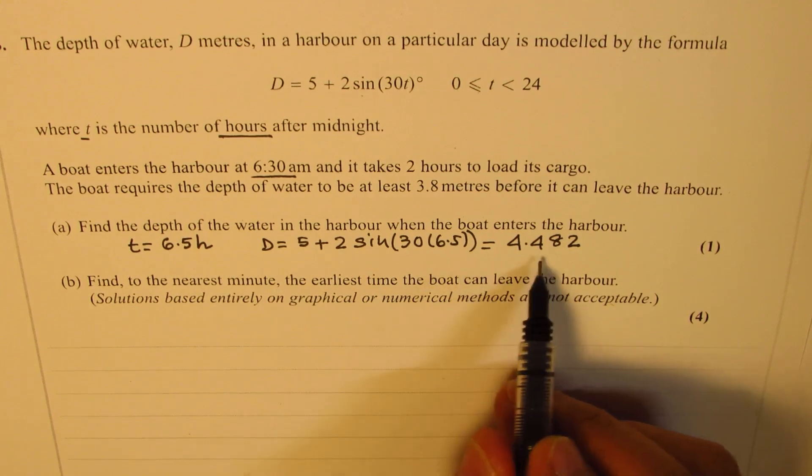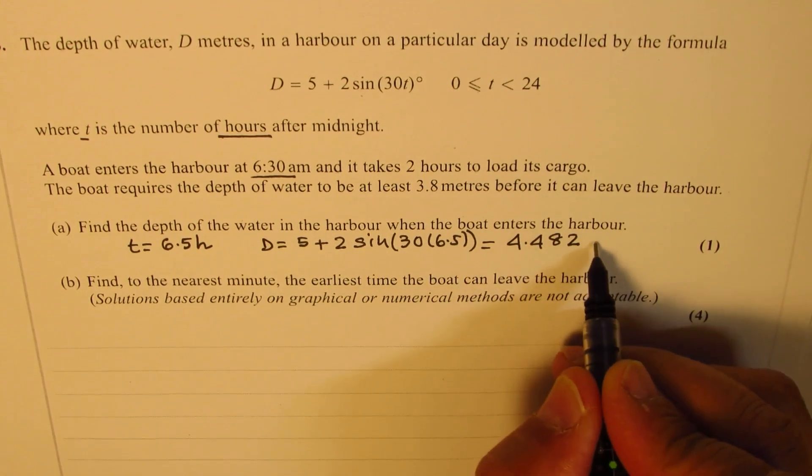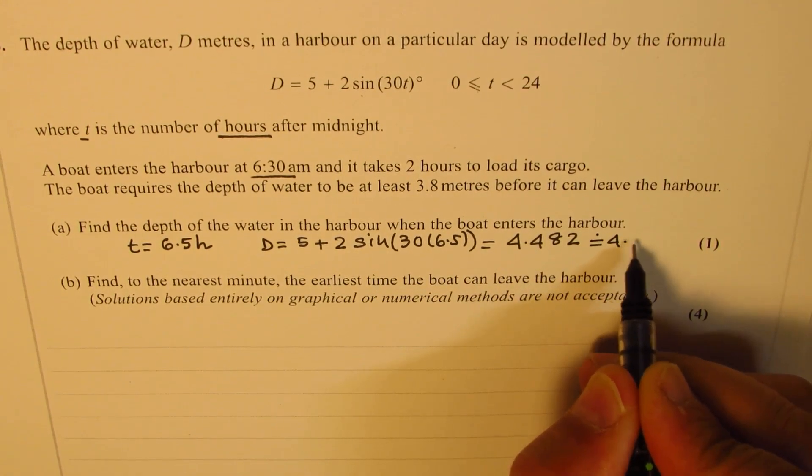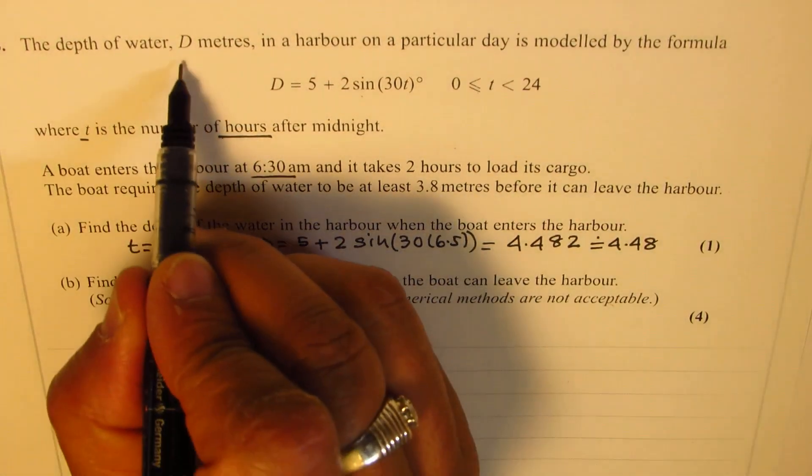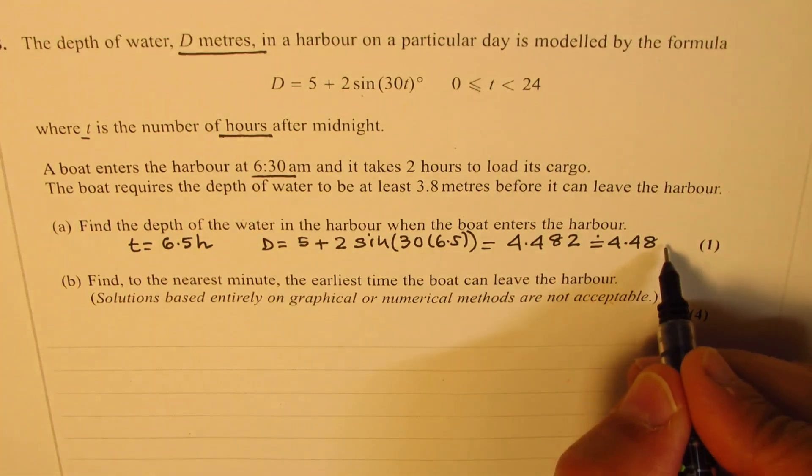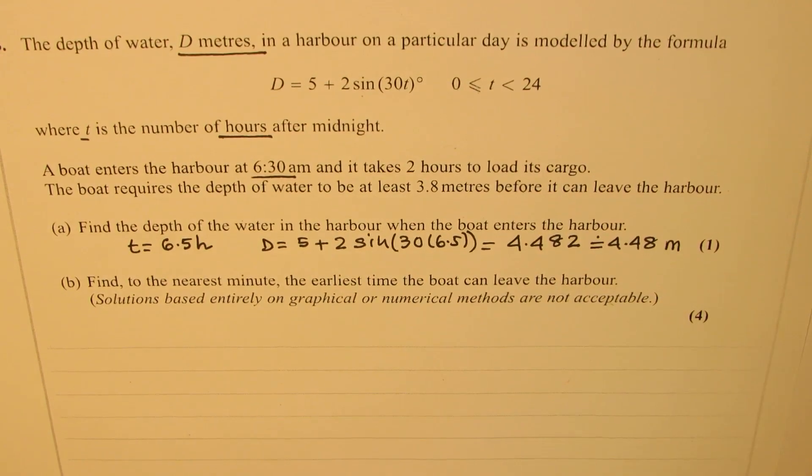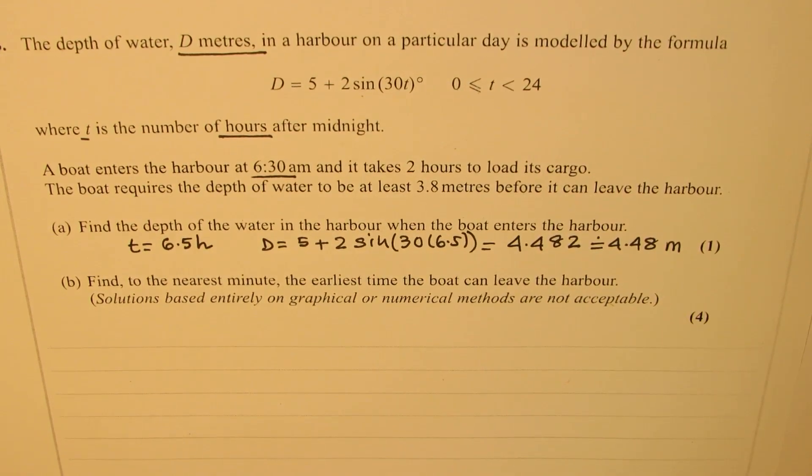Now all the answers should be given to three significant places. So we'll write this as 4.48. And the units for d, distance, is in meters. The depth is 4.48 meters. So that is part A for us.